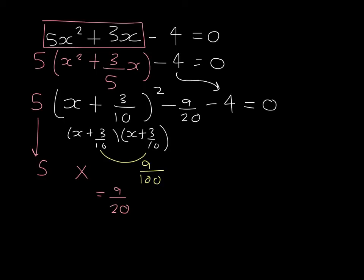So we then have 5 bracket x plus 3 tenths all squared take away 4 and 9 20ths which is equal to 0.